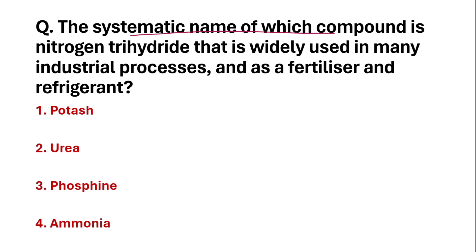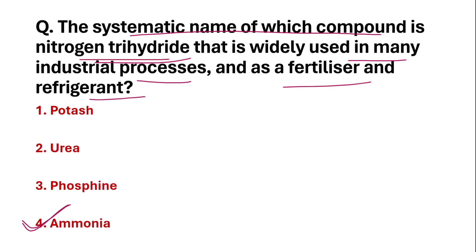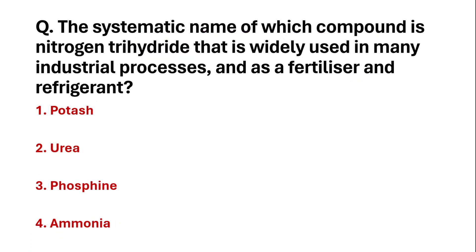The systematic name of which compound is nitrogen trihydride, and it is widely used in many industrial processes as a fertilizer and refrigerant? The gas used in refrigerators is Ammonia. Ammonia is called nitrogen trihydride — this is its systematic name. The correct answer is Ammonia.